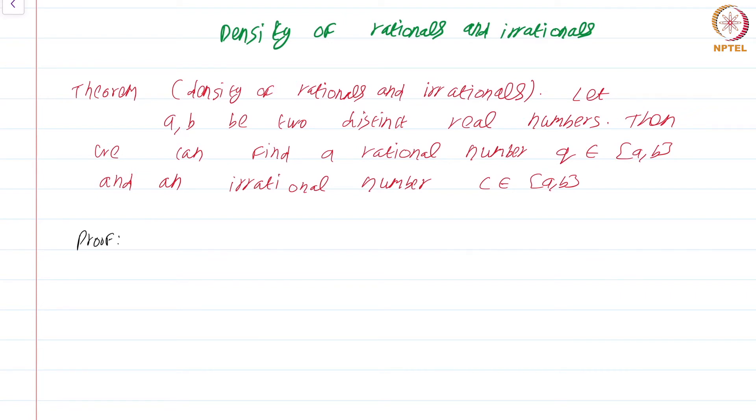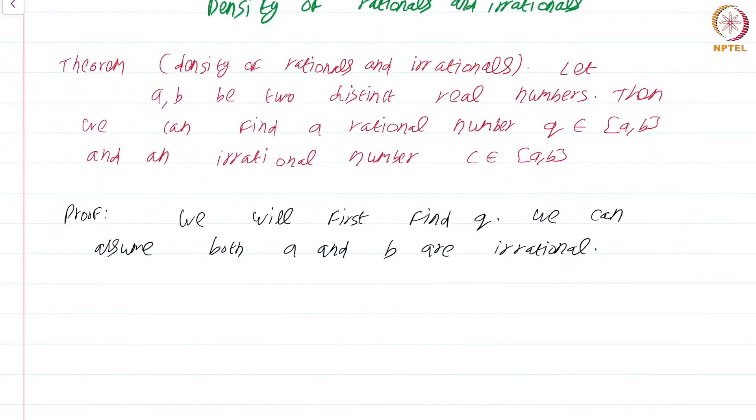Proof: We will first find q. We can assume both a and b are irrational. Please pause the video and think about why we can make this assumption in this case. If either a or b is rational, then you can just choose that to be the required rational number q.